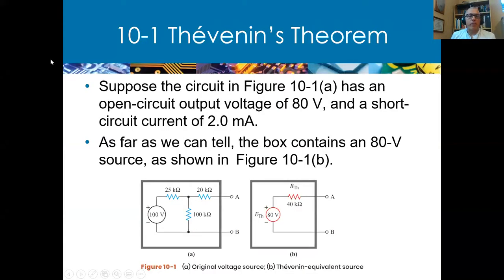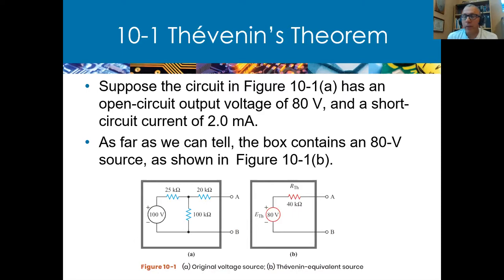Equivalent circuit theories. We talked about making an equivalent circuit from a bigger circuit and reducing it down to one source and one resistor. For Thevenin's theorem, when we have a two-terminal output for any circuit, we can reduce that down to the same two-terminal output, but reduce it down to one equivalent voltage and one equivalent resistance.